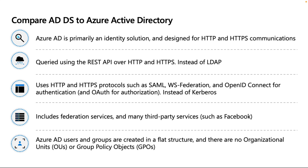Azure AD uses HTTP and HTTPS protocols such as SAML, OAuth, federation, and OpenID Connect for authentication, instead of Kerberos which is used on-premises. Azure AD also includes federation services and supports many third-party services. Additionally, users and groups are created in a flat structure — there are no Organizational Units or Group Policy Objects in Azure AD.